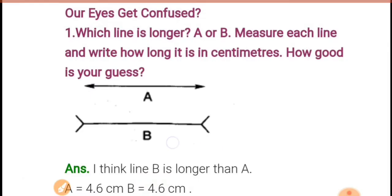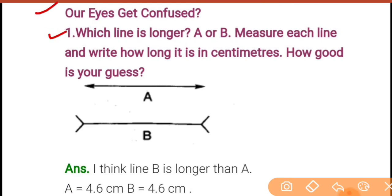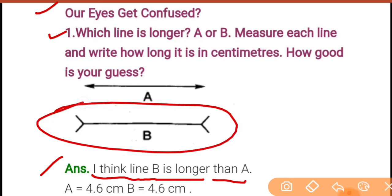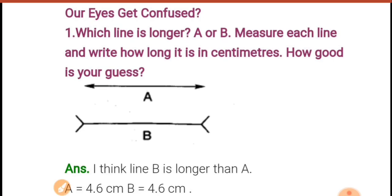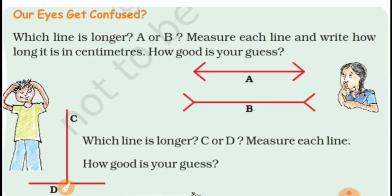When you measure line A and line B, they will be the same. The answer is: I think line B is longer — everyone will feel line B is bigger — but that is not so. Line B is not longer. When you measure both lines, line A will be 4.6 cm and line B will also be 4.6 cm. Both lines are of the same length.